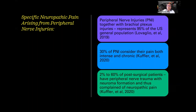The peripheral nerve, together with the brachial plexus, represents 95% of nerve injuries in the U.S. general population. 30% of those peripheral nerve injuries consider their pain to be both intense and chronic. At the same time, 2% to 60% of post-surgical patients will usually have peripheral nerve trauma with neuroma formation, resulting in neuropathic pain. So there are really a lot of challenges in this problem.